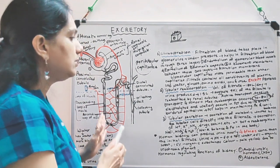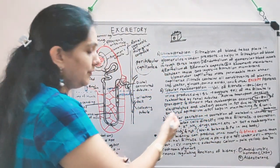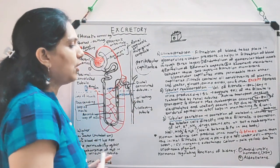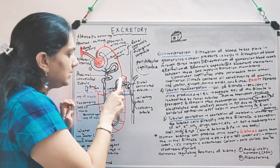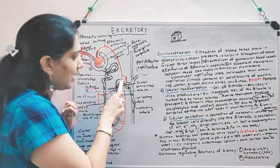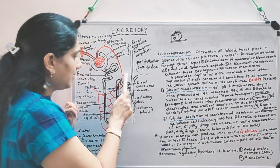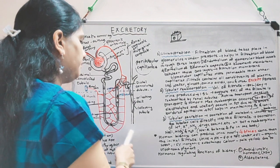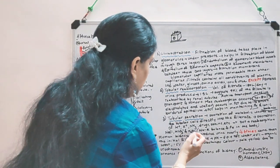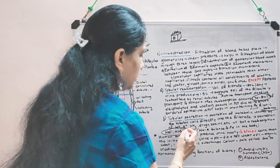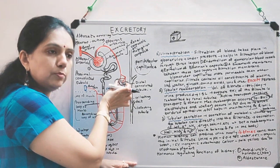In DCT, there is secretion of metabolic waste directly into the filtrate by the tubular cells from the capillaries. Substances like hydrogen ions, potassium ions, ammonia, drugs, and toxins are directly put into the DCT. Simultaneously, substances like sodium, water, and bicarbonate are reabsorbed. So in DCT: hydrogen, potassium, ammonia, drugs and toxins are secreted, while sodium, water, and bicarbonate are reabsorbed.